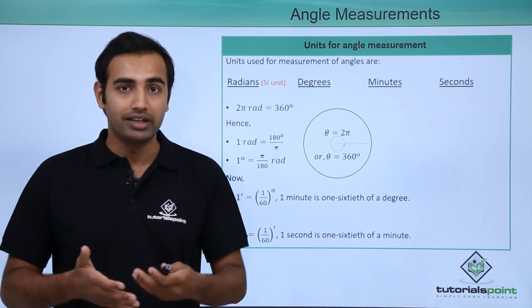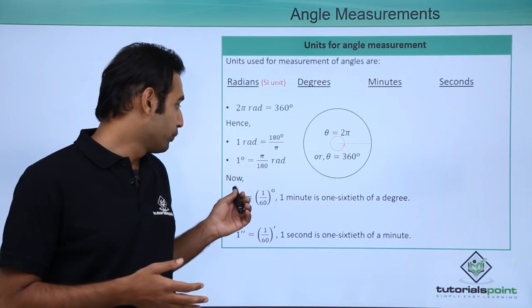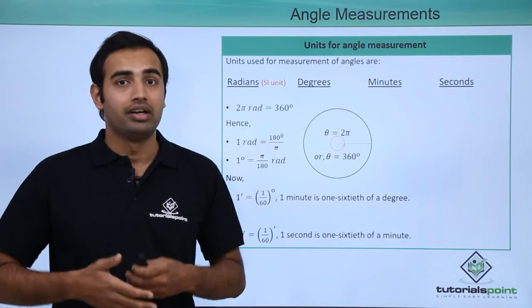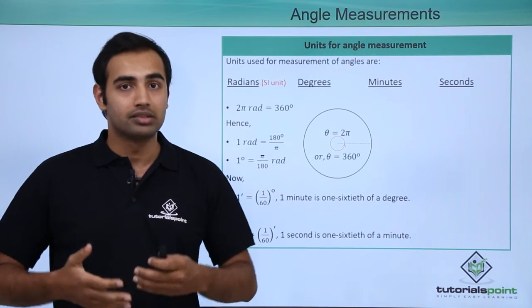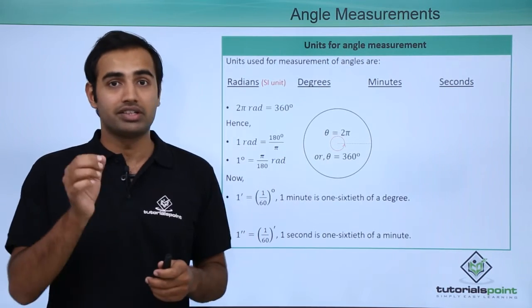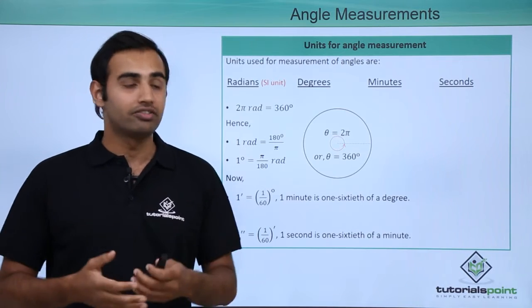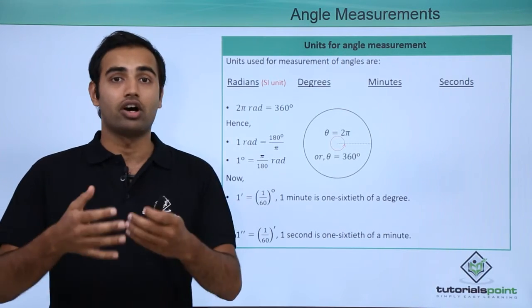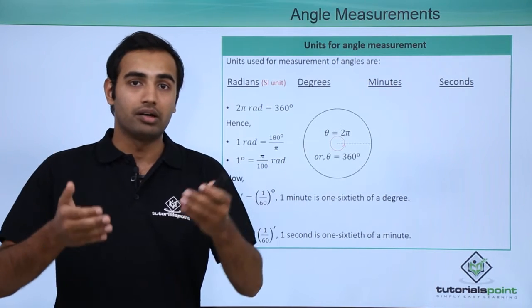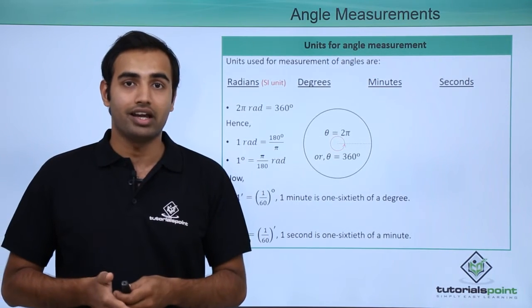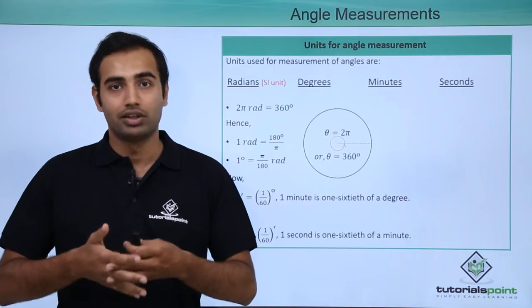Now 1 minute is represented by 1 prime symbol on top and it is defined as 1/60th of a degree. Similarly 1 second represented by double prime symbol is defined as 1/60th of a minute. Now these units will be coming in different forms again and again and you will have to apply these conversions to angles.